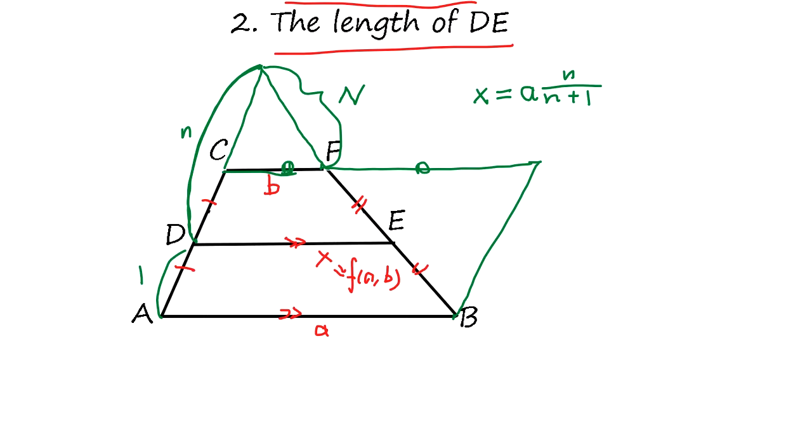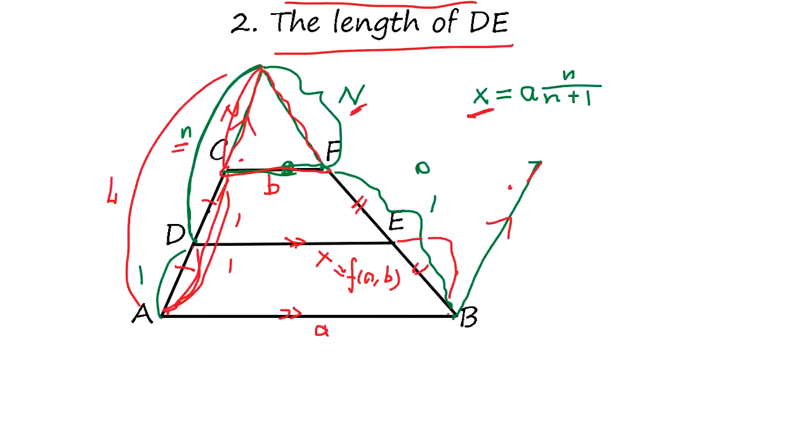So the ratio of this n to one is how much you have to extend. So how much do we extend this part? Well, the relationship will be same: b equals a times n plus one over n. The same equation.